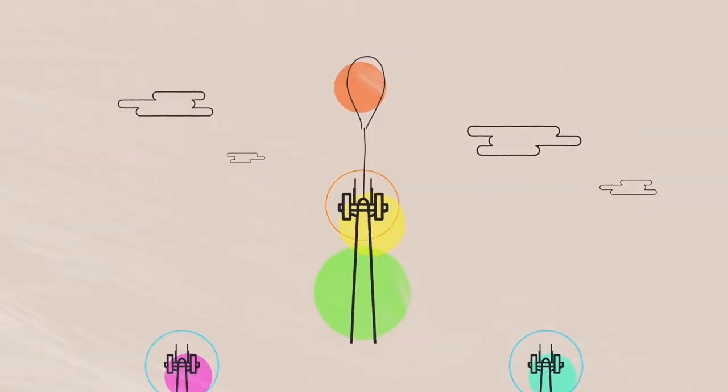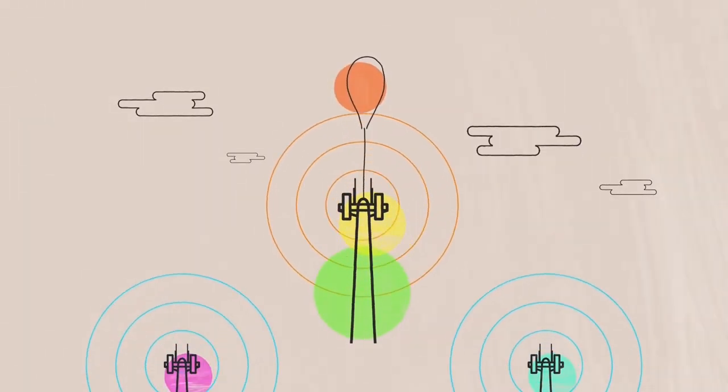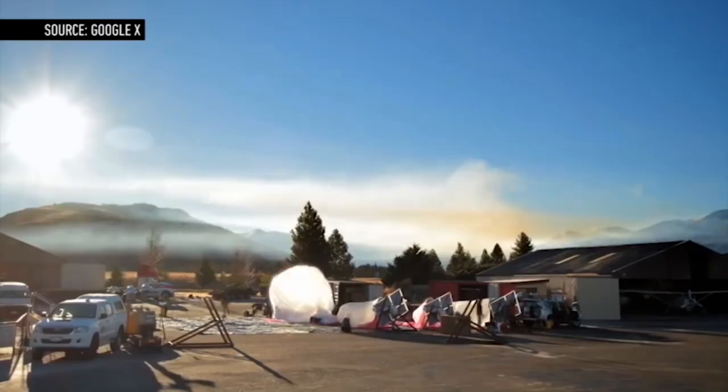Google launched the High Altitude internet balloons to spread internet connectivity around rural parts of Africa and Southeast Asia and a few other locations with little to no internet access.